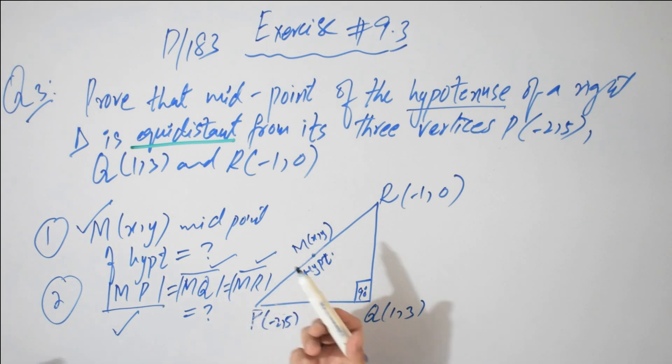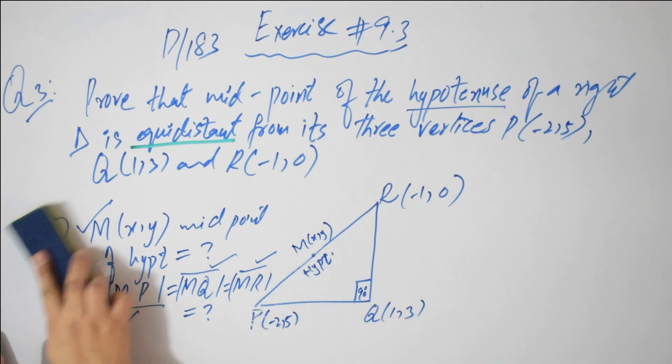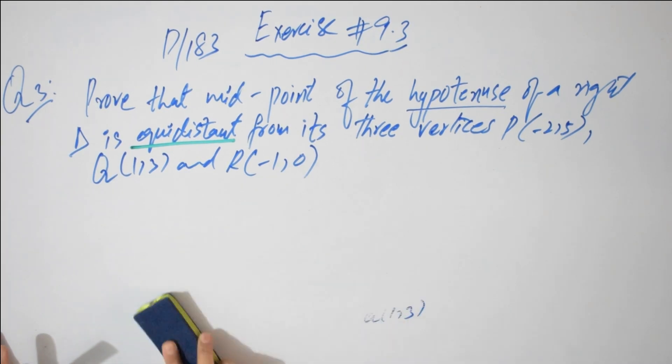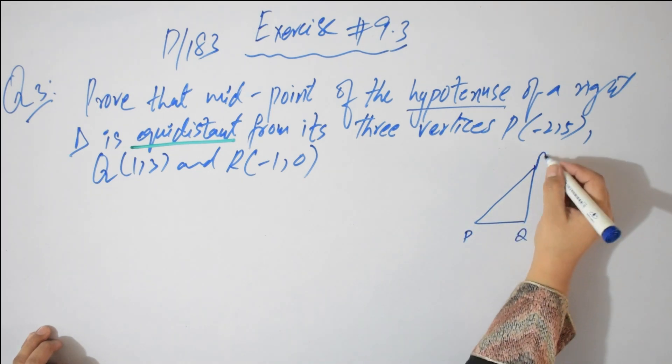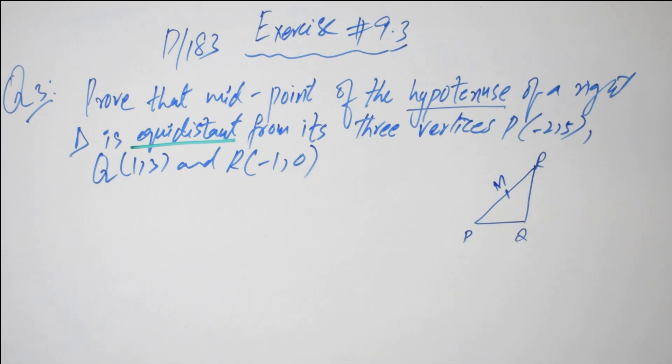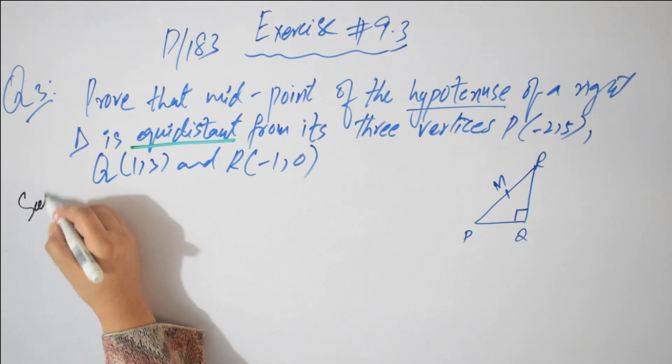This distance of M from P is equal to distance of M from Q is equal to distance of M from R. This you have to prove. This is the plan which you have to do in the solution. First, midpoint and then distances. Now in solution, midpoint of hypotenuse I give name as M.